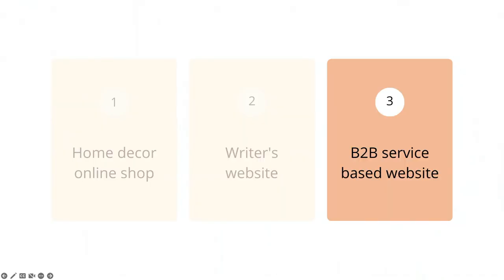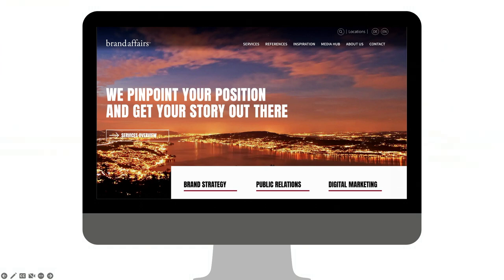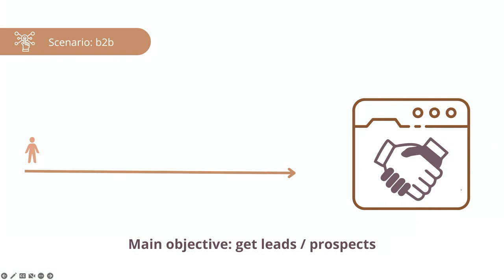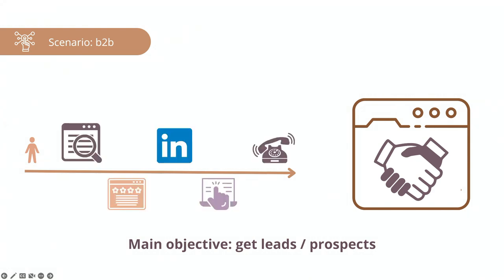Our next and last scenario is a B2B company — an agency that started as a PR and communications agency, slowly moving into branding and digital marketing. The main question: where are our customers coming from, especially the leads? How are leads converting? How can we get more clients on monthly retainers? The primary objective of this website is not selling but getting leads that eventually become clients. Their main touch points include Google organic search, Google Ads, Google Business Profile reviews, LinkedIn, and offline networking.